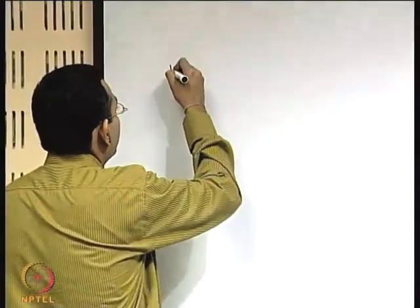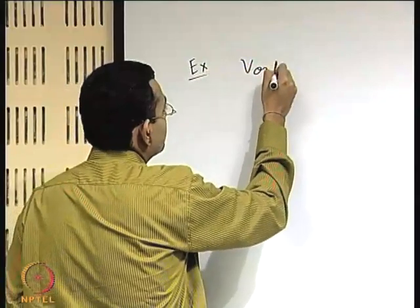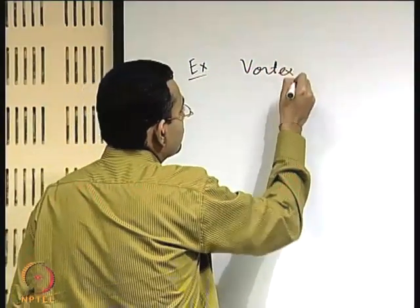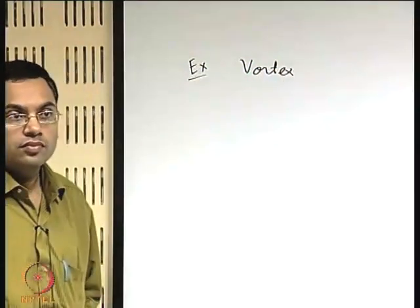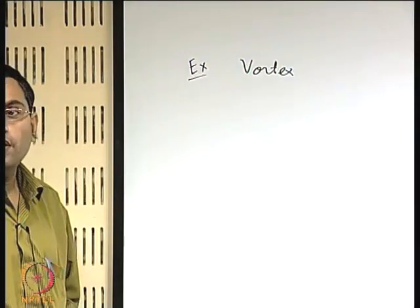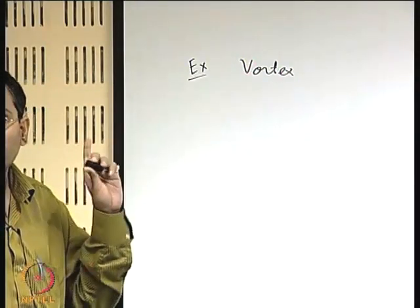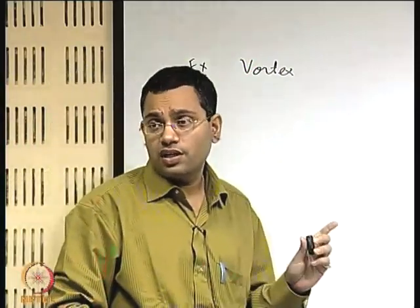We continue with our examples of superposition of different plane potential flows. The next example we will consider is a vortex. When we consider a vortex, remember that we are talking about an irrotational flow — specifically, an irrotational vortex or a free vortex.